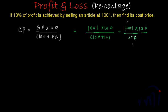11 nines are 99 and 11 ones are 11, that's 91. So from here the cost price will be equal to 91 multiplied by 10, that is 910.